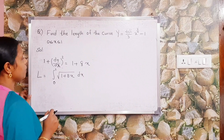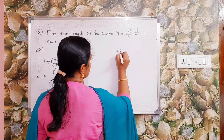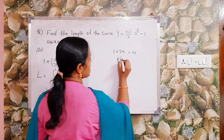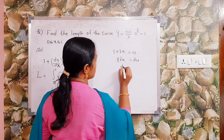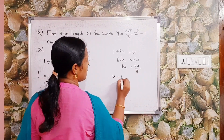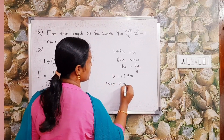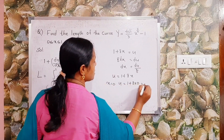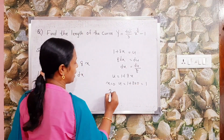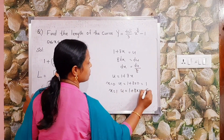To evaluate the integral, let u = 1 + 8x. Differentiating: 8 dx = du, so dx = du/8. When x = 0, u = 1; when x = 1, u = 1 + 8 = 9. The integral becomes (1/8)·integral from 1 to 9 of u^(1/2) du.